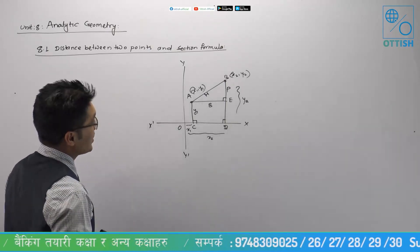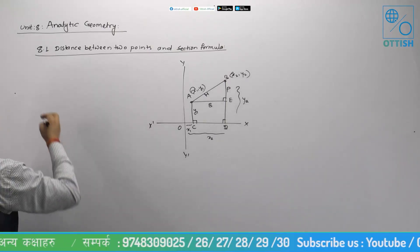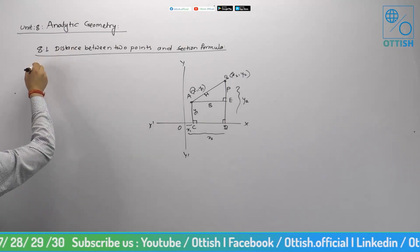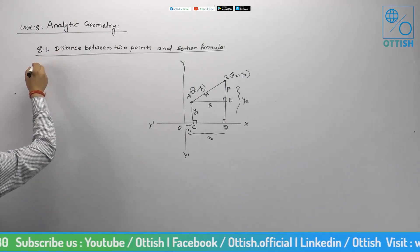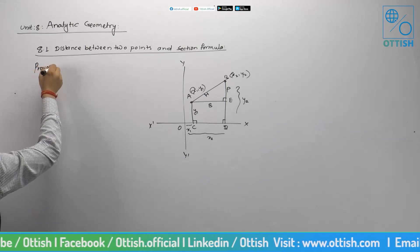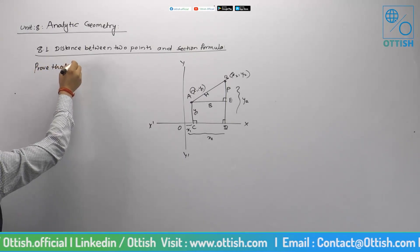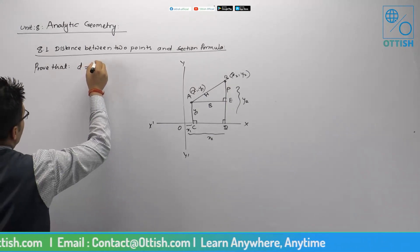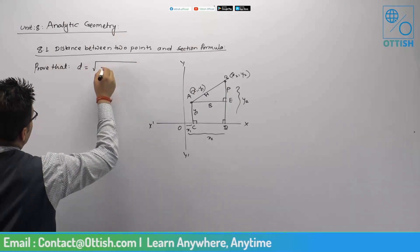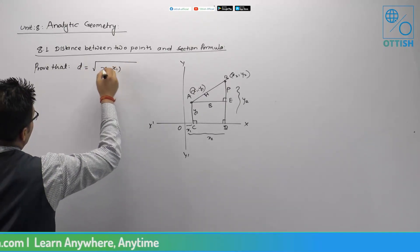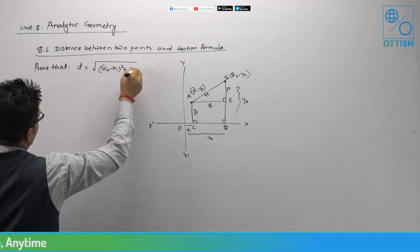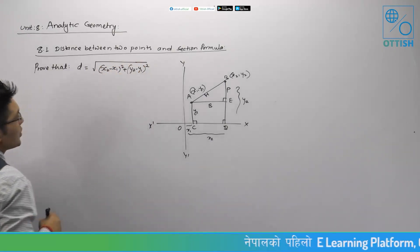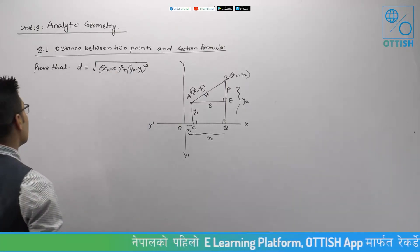If we apply the distance formula, the distance between two points is equal to the square root of (x2 minus x1) whole squared plus (y2 minus y1) whole squared.